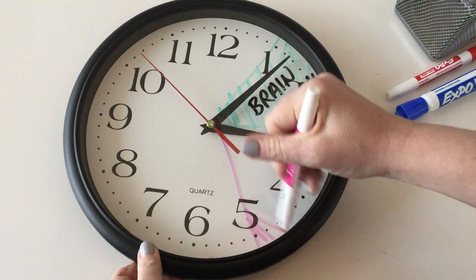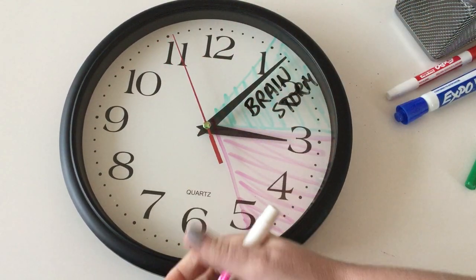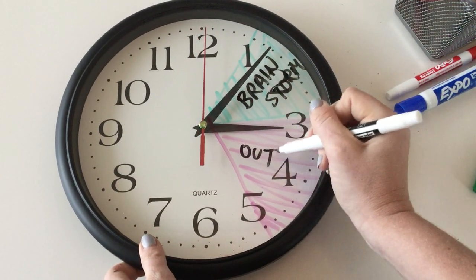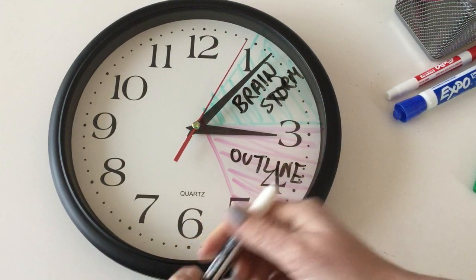After we brainstorm, we need to get our outline together. That's going to take another ten minutes. For some kids, we can spend the whole hour brainstorming, so we want to make sure we're moving along on all parts of the assignment. That's outline. Now we've got the big chunk—we want to spend a good amount of time on our writing.